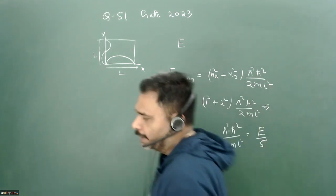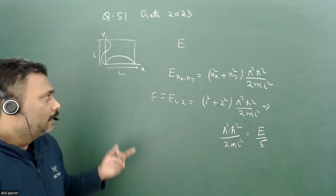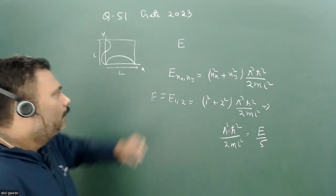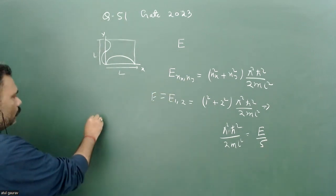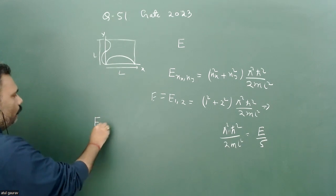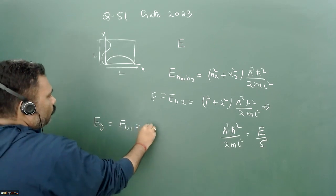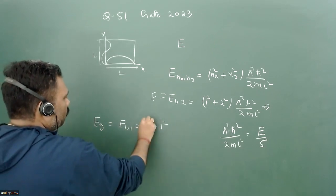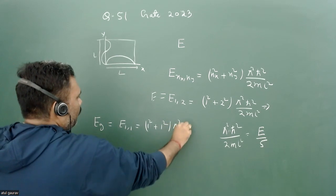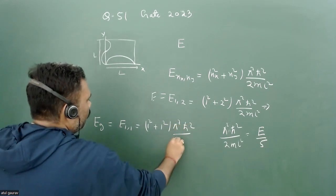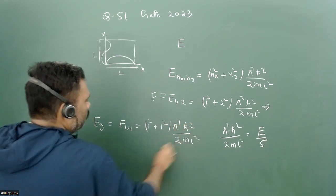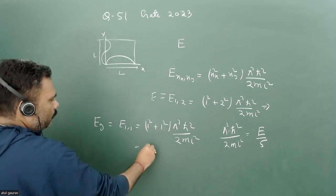And the ground state, obviously the ground state we have quantum number nx is equal to 1 and ny is equal to 1. So for the ground state we have quantum number E_{1,1}, that is 1 square plus 1 square, pi square h-bar square upon 2mL square, and this value is 2.